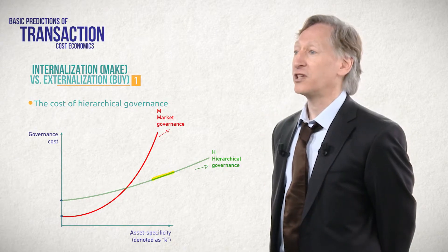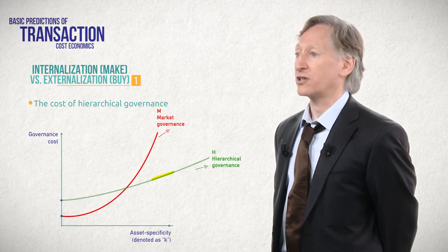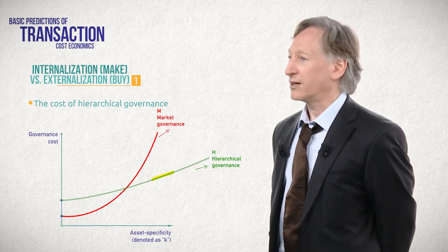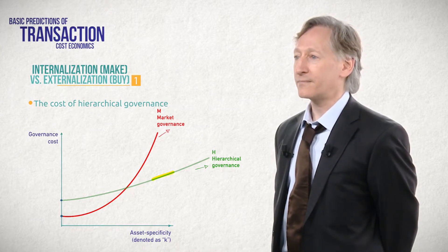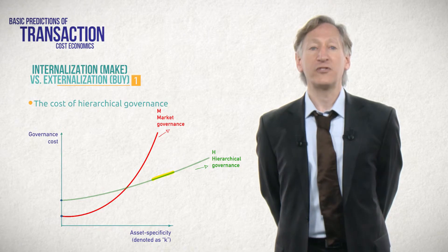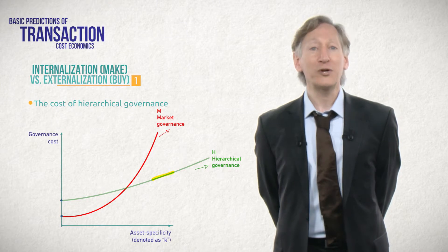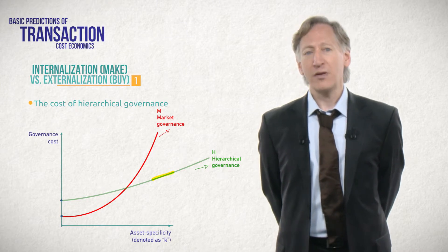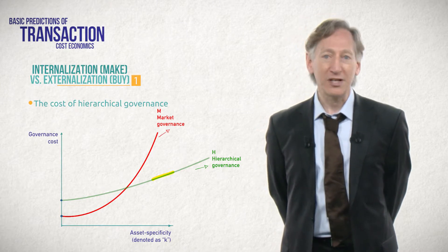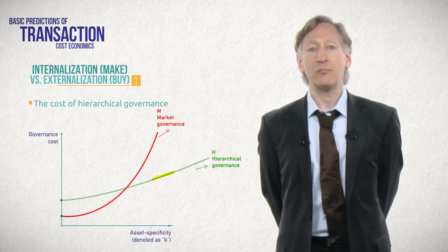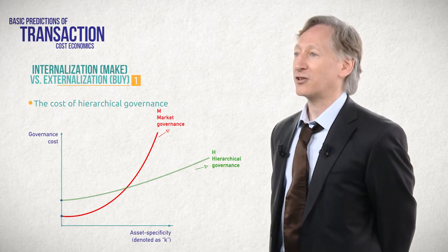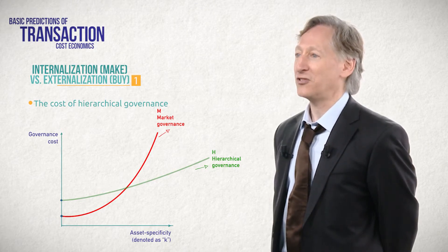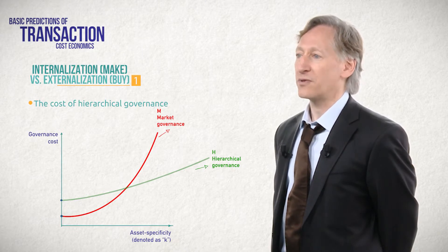As asset specificity increases, the cost of governing a transaction through vertical integration increases, but it increases much more slowly than the cost of governing that transaction through the market. As noted above, as asset specificity increases, the hazards of market contracting become ever more dangerous. But if we are two divisions of the same firm, then I'm much less worried. At the limit, if you and I have a disagreement, we can petition our boss and she can tell you to cut it out. Thus, for transactions characterized by high levels of asset specificity, vertical integration is a more efficient governance form than markets.